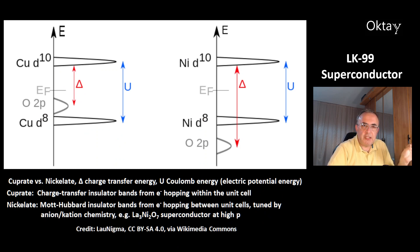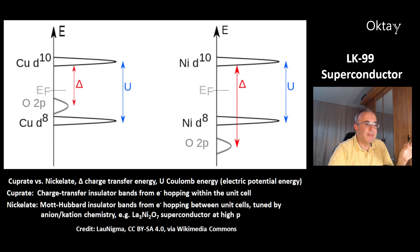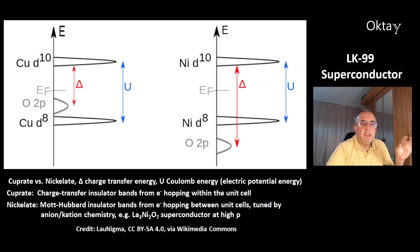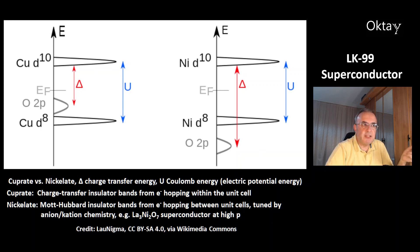This is a nice comparison of cuprates versus nickelates. Delta is the charge transfer energy, and U is the Coulomb energy, which is the electric potential energy. Cuprates have charge transfer insulator bands from electron hopping within the unit cell. Nickelates have Mott-Hubbard insulator bands from electron hopping between unit cells. This can be tuned by the chemistry of anions and cations, meaning you can also make superconductors from nickelate. For example, lanthanum nickel oxide is a superconductor, but only at high pressures.